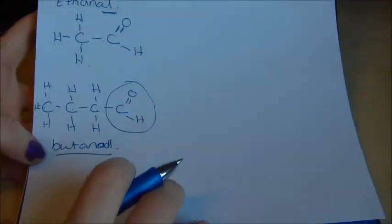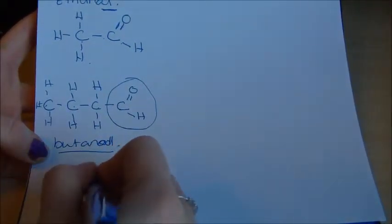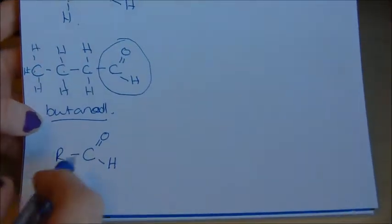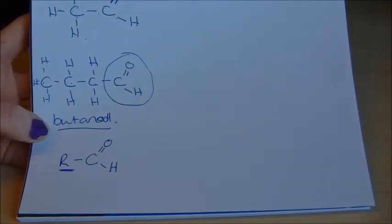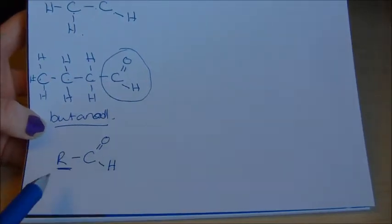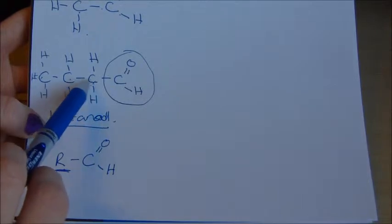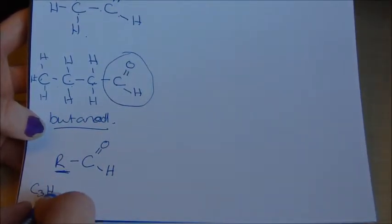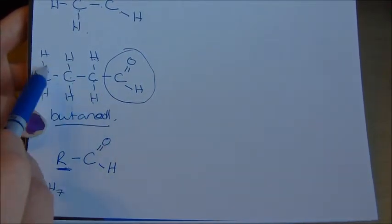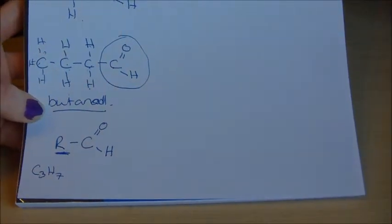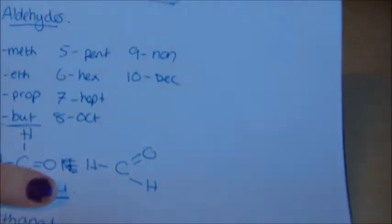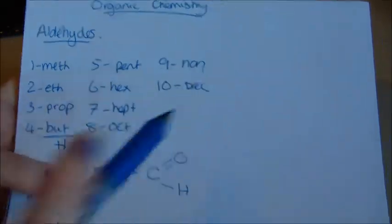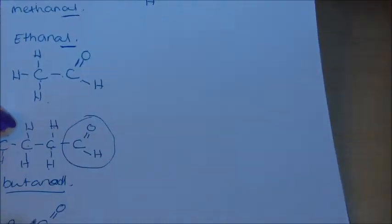The general structure when you look at an aldehyde is like this, but this R represents another set of groups - another set of atoms or groups. So in this case, this R for this one would be C3H7 because you've got one, two, three, four, five, six, seven hydrogens attached to that. So as long as you keep in mind this here and remember these, you should be able to name any aldehyde given to you in an exam.